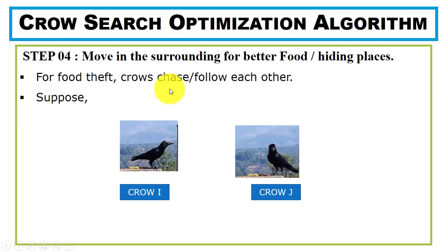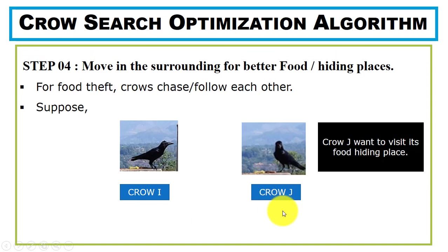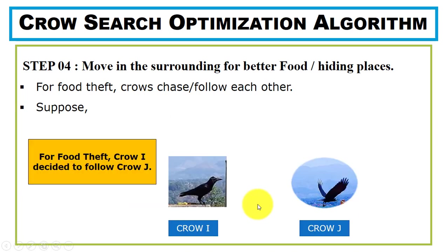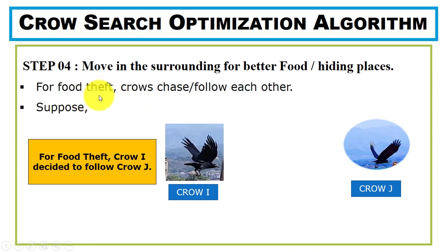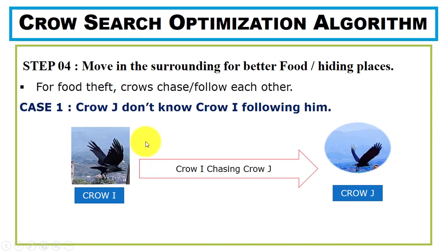For food theft, crows can chase each other. Suppose we have two crows, crow i and crow j. Crow j wants to visit its food hiding place, and crow i decides to follow crow j to steal its food. So crow i is now chasing crow j. There are two cases: in the first case, crow j does not know that crow i is following it.